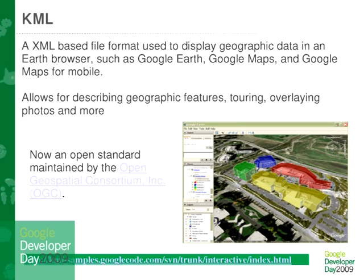KML is the format we use to describe geographic objects. A geographic object can be any kind of feature — a placemark, a zone, a polygon, a line, a 3D model — and all of that is described in XML following the KML schema. This KML schema is now an open standard maintained by the Geospatial Consortium. You can have a look at that link just to see what it means to build a KML.